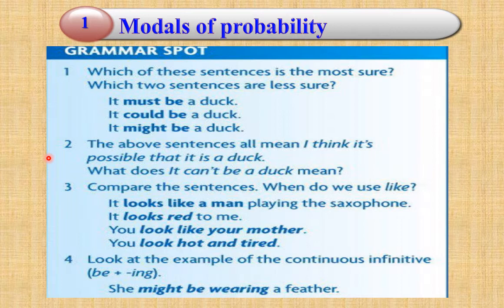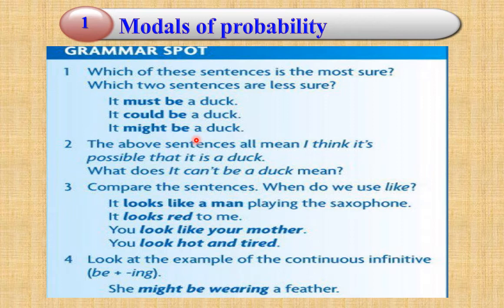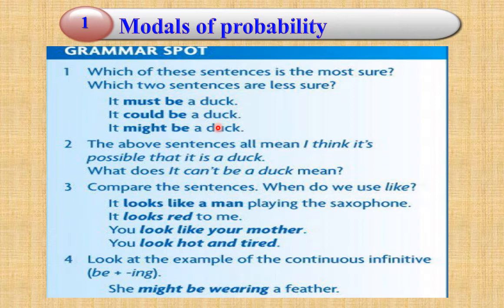Modal verbs of probability — this grammar spot is in your book, but the lecturer will complete it for all students. We need to make sure which sentences are most sure and which are less sure. Please listen and read the three sentences: 'It must be a duck' — most sure; 'It could be a duck' — more sure or less sure; 'It might be a duck' — less sure.